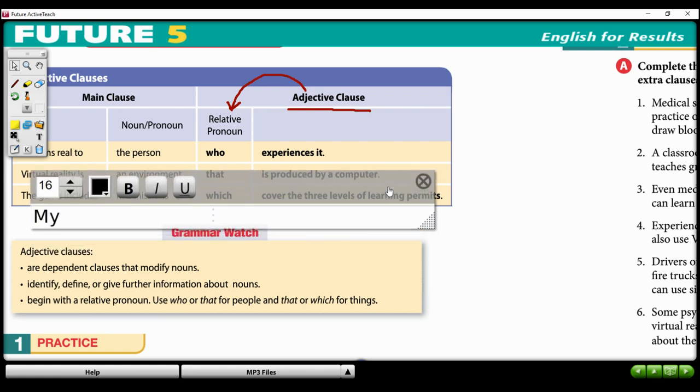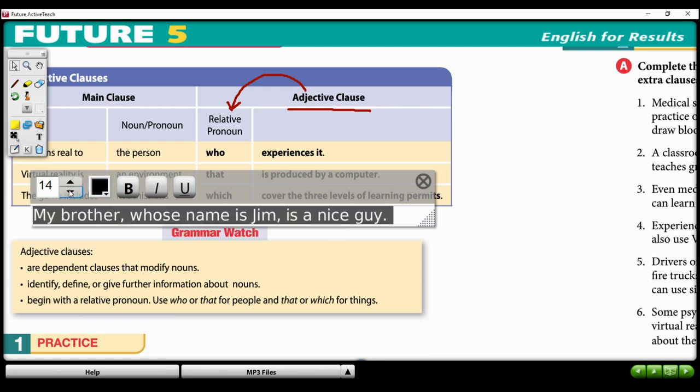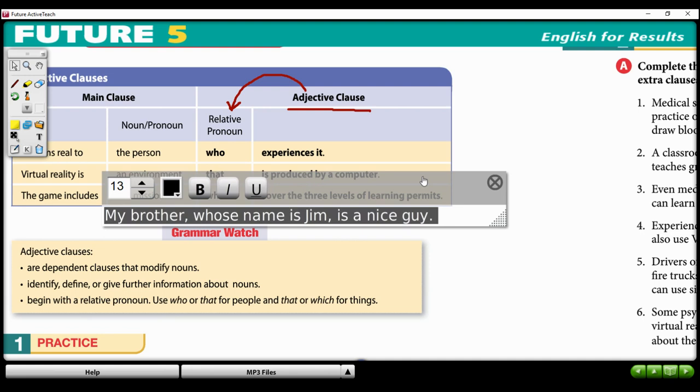And I might say, my brother, whose name is Jim, is a nice guy. And so, in this case, whose is a relative pronoun as well. And we're describing my brother by giving his name. And so, this is another example of an adjective clause. I'm describing my brother as a nice guy.